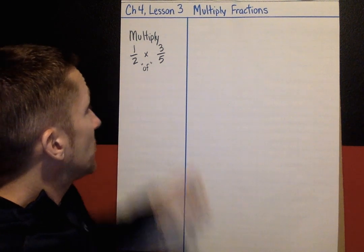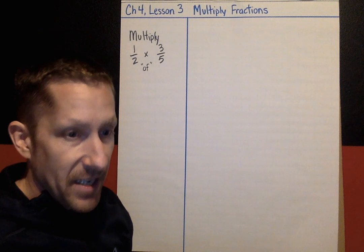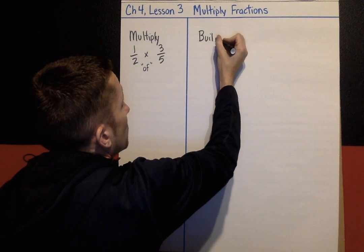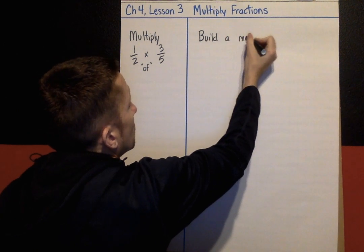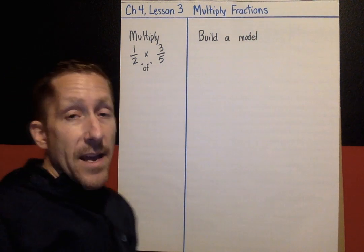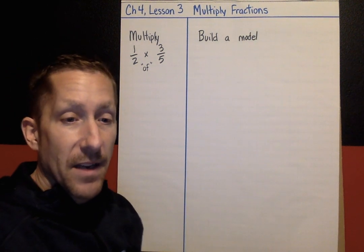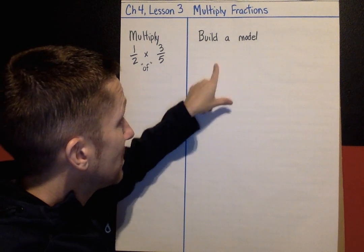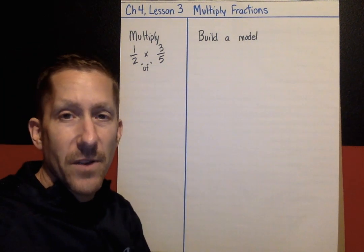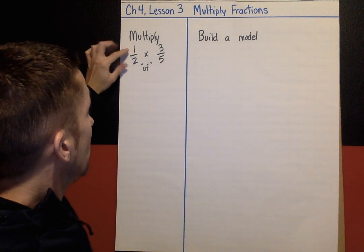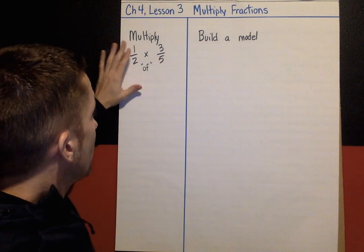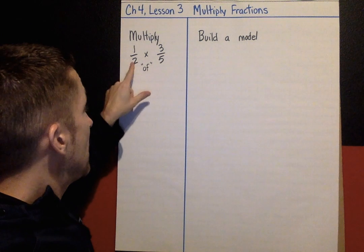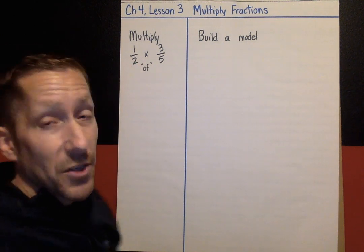So one-half times three-fifths. The first strategy I'm going to show you is to build a model — you can think of this as a brownie pan model. I'm going to use the boxes here to model a brownie pan. On one dimension, I'm going to show three-fifths of the brownie pan, and the other dimension, I'm going to show one-half.